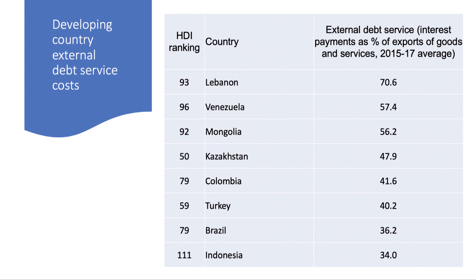This table shows the level of debt service — the cost of paying the interest on the money borrowed. In some countries, such as Lebanon, Venezuela, and Mongolia, the level of interest payments accounts for nearly half the value of their exports. That can be a major burden and is relevant to the question.